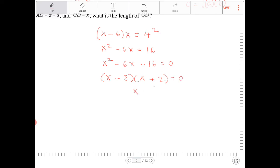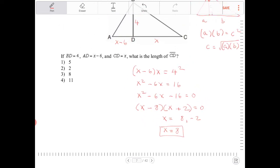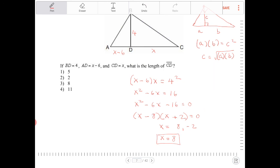The value of X that will satisfy this equation will be positive 8 or negative 2. The only value that makes sense in this problem will be positive 8. So the value for CD, therefore, is going to be 8, and that's option 3.